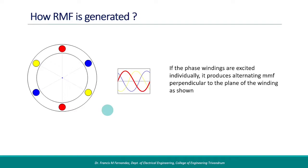For simplicity, consider single turn windings as shown here. We have three windings, R, Y, and B, separated by 120 degrees. When they are energized individually, they produce alternating field perpendicular to the plane of the winding.